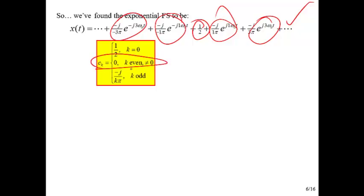So here's what we found the exponential Fourier series to be. Written out, term by term. Here's the c sub 0 term. k equal to 1, 3, minus 1, minus 3. Notice there's no even terms, right? Because the c sub k are equal to 0 for even k.